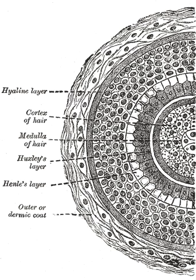The word hair usually refers to two distinct structures. The part beneath the skin, called the hair follicle, or, when pulled from the skin, the bulb. This organ is located in the dermis and maintains stem cells, which not only regrow the hair after it falls out, but also are recruited to regrow skin after a wound.